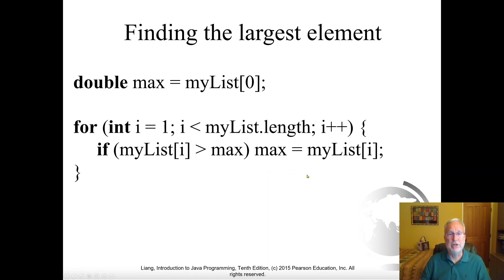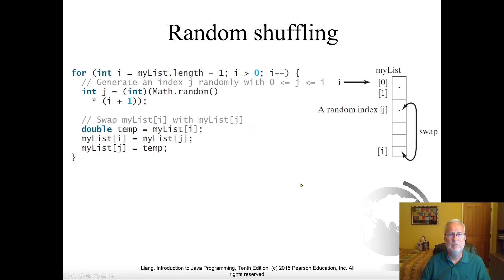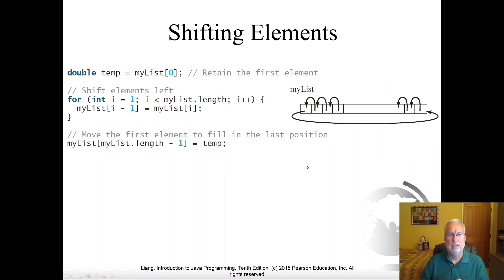Probably in the final — hint, hint. Finding the largest element inside the array — you can do that too. You can also shuffle the array by randomly picking some places within it and just swapping them. That's an interesting way to shuffle. You can also shift elements — shift them all in one direction, to the left or to the right. That's easily done.